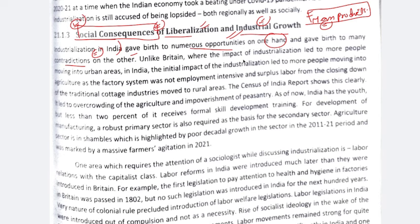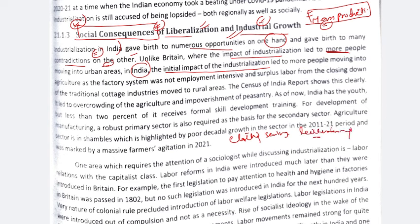In Britain, the impact of industrialization was that more people moved from rural to urban areas. But in India, the initial impact of industrialization was a bit damaging. In India, labor intensive work was already happening in cottage industries — like clothes sewing, handmade clothes, leather tanning, etc. When industrialization came, traditional cottage industries were closed down because factories produced many goods, making the artisans and handicraft workers involved in cottage industries jobless.